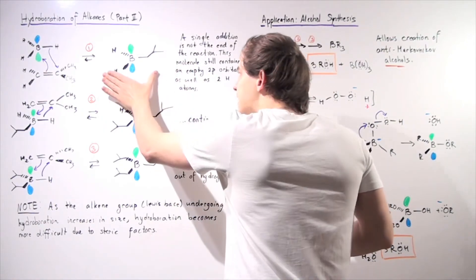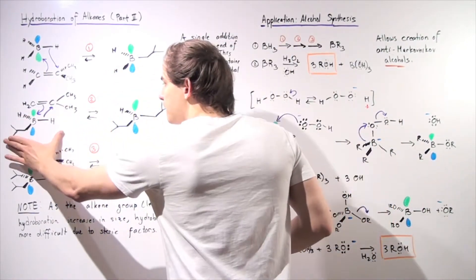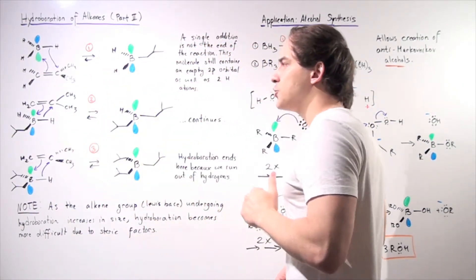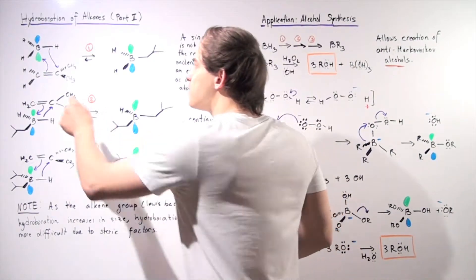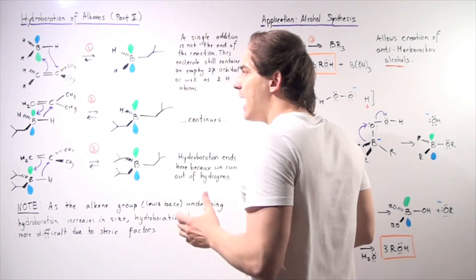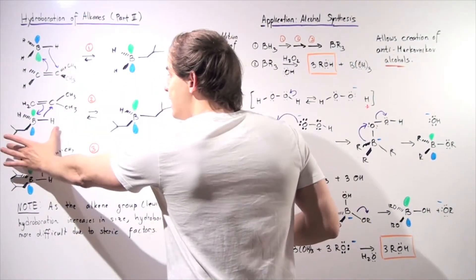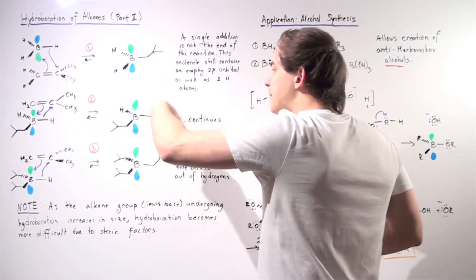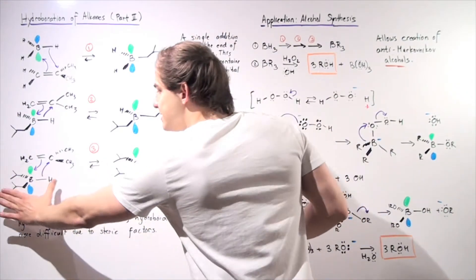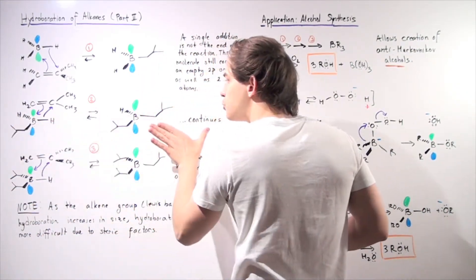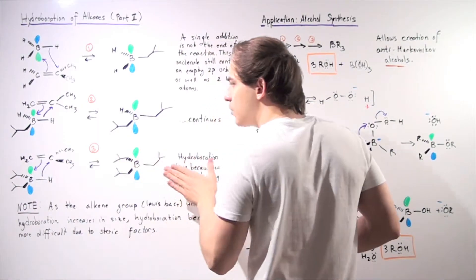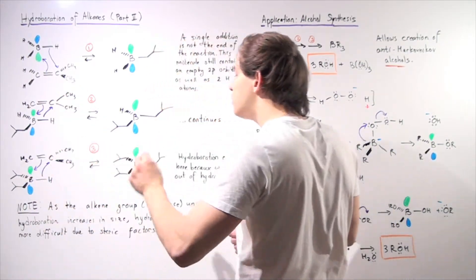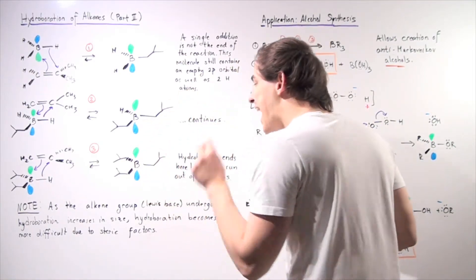Taking that first product as the reactant in a second hydroboration reaction, we react it with the same alkene to get the next product. Continuing the same step — using the product from reaction two as the reactant in reaction three — we react it with the same alkene again, and we produce the following symmetrical molecule.